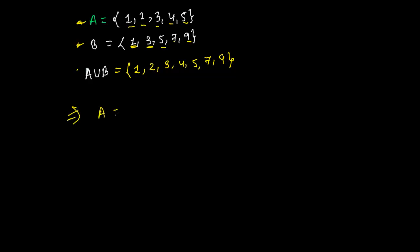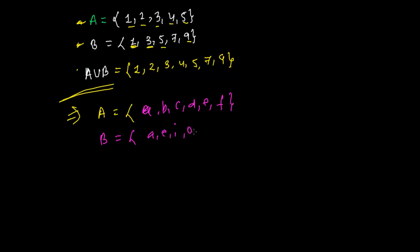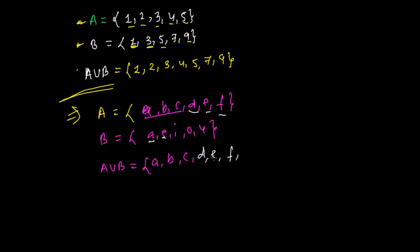One more example: A = {A, B, C, D, E, F} and B = {A, E, I, O, U}. For A union B, we write all elements of A: A, B, C, D, E, F — and then from B: A and E are already mentioned, so we add I, O, and U. So A union B = {A, B, C, D, E, F, I, O, U}.